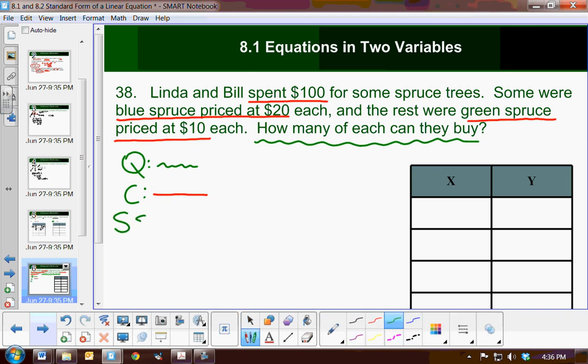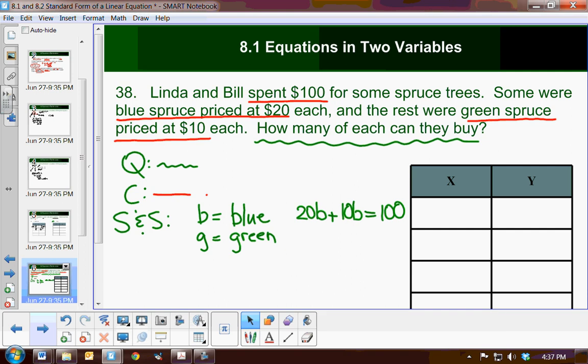Now, let's go ahead and let's pick a strategy and solve. Well, if I were to look at these facts, I realize that I've got two different types of trees. Now, since I'm learning about two variables, you know what? I can write a two-variable equation. So let's let B equal blue spruce trees. And let's let G equal green spruce trees. Now, we know that the blue spruce trees are $20 each, and we know that the green spruce trees are $10 each, and we know that we've spent a total of $100. So now I have written equations, but I need to figure out how many of each. Oops, you see my mistake? I hope you did. It was 10G, right? There we go.